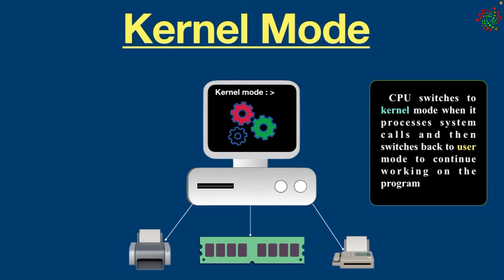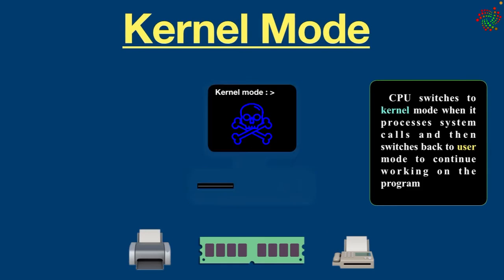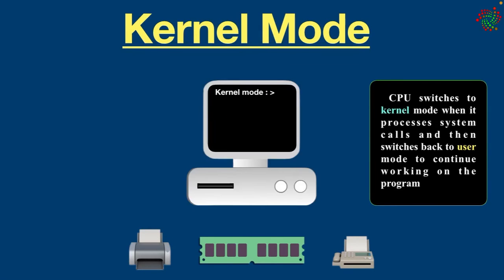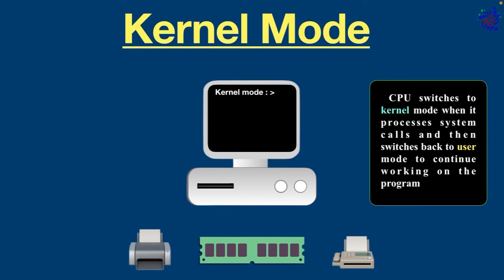It's important to note that it's not possible to run all processes in kernel mode, because if a process fails, the entire operating system might go down. In user mode, only a single process fails if an error occurs. That's why a system crash in kernel mode is dangerous and makes things more complicated, while in user mode a system crash can be recovered by simply resuming the session.